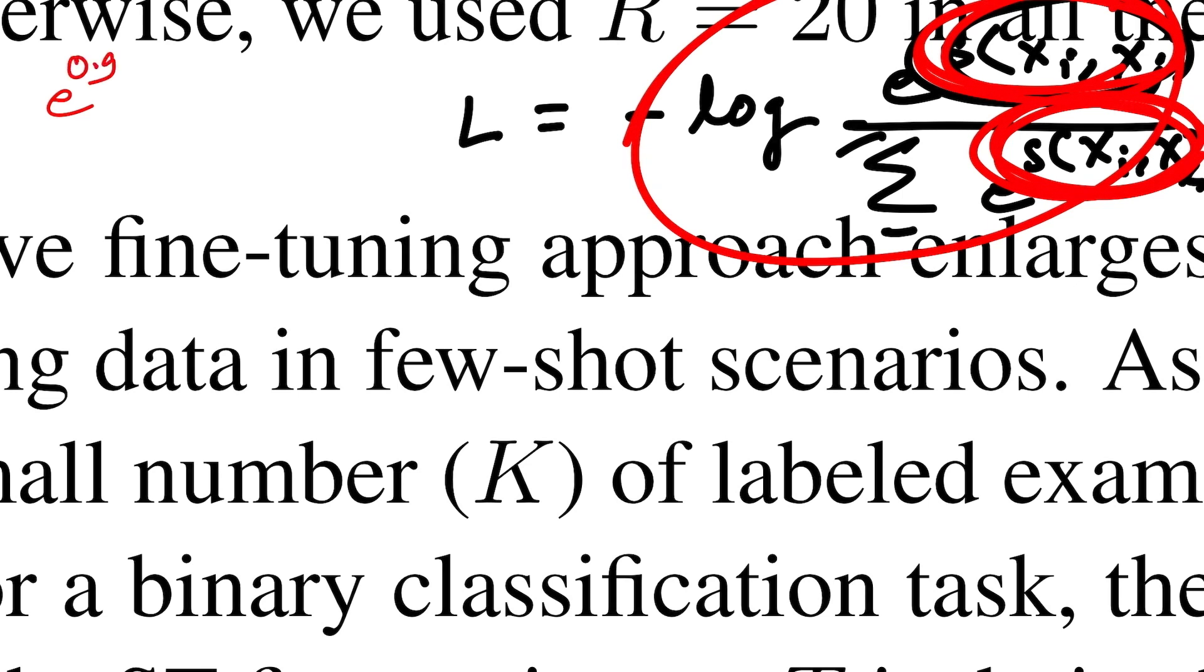If you take an example, let's say in two cases where the upper numerator is e to the power 0.9 similarity and denominator is fixed—let's call it K—and the other scenario is e to the power 0.7 similarity and still the denominator is the same, which is K.